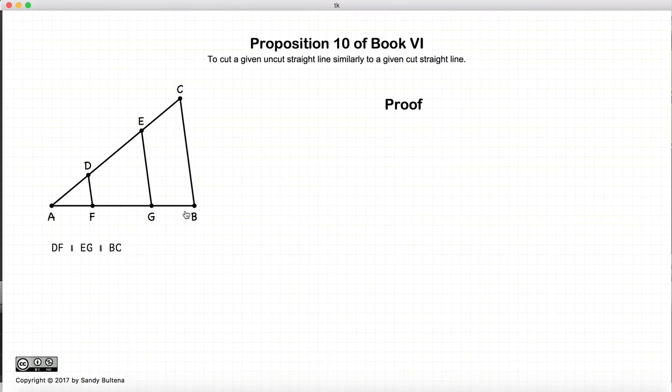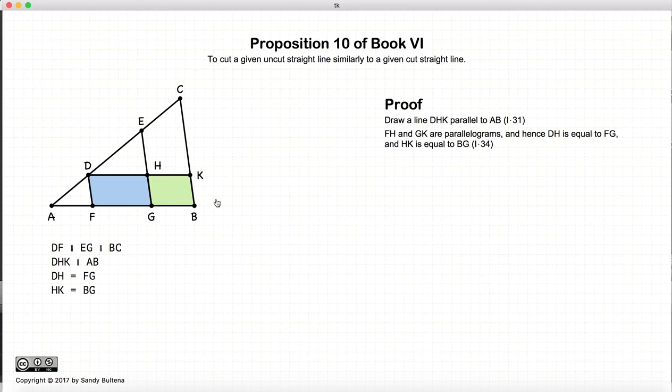So how do we prove that this is actually so? The first thing we do is we draw a line from the point D parallel to AB. So line DHK is parallel to line AB. DHK is parallel to AB, DF is parallel to EG, which is parallel to CB.